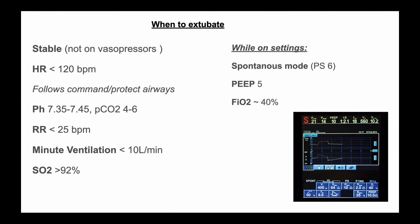If you want numbers: patient stable, non-vasopressors, heart rate below 120 while awake, oriented even if slightly agitated, pH 7.35 to 7.45, PCO2 of 4.6, respiratory rate less than 25 breaths per minute, minute ventilation less than 10 liters per minute, and saturation above 92% while on pressure support mode with a PEEP of 5 and FiO2 of 40.